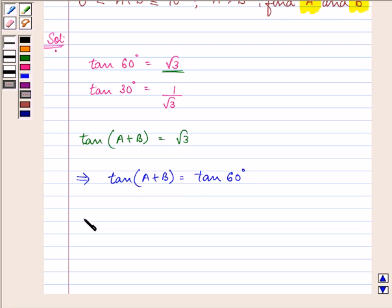So this implies that the value of A+B will be equal to 60°. Let us take this equation as (i).